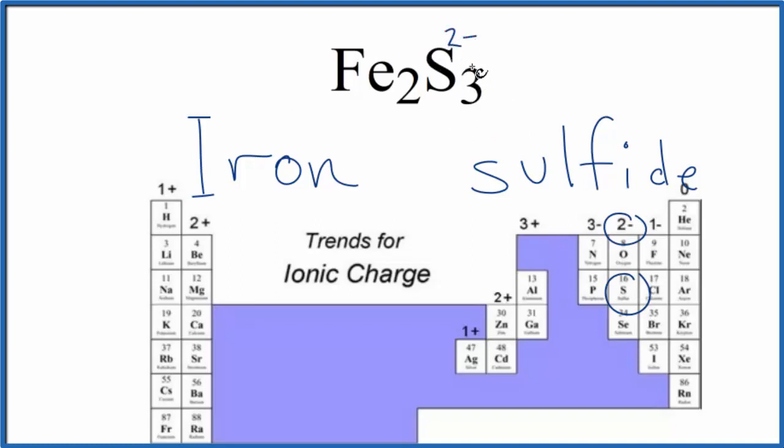So the whole thing needs to be neutral. So 3 times 2 minus, that's 6 minus. So we need a 6 plus to balance the charge out. 2 times 3 plus, that would give us 6 plus. So the charge on each one of those ions, that's going to be 3 plus.